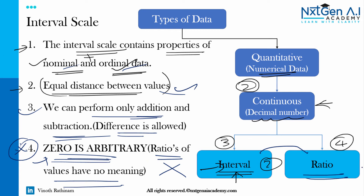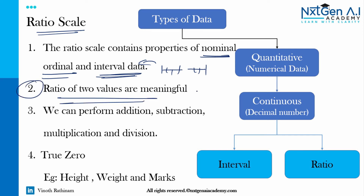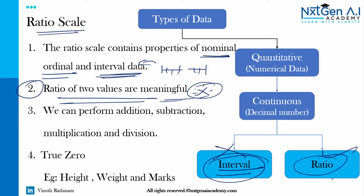Now the next one is ratio scale. The ratio scale contains the properties of nominal — named — ordinal — ordered — and interval — equal distance. In addition, there is an absolute zero, and the ratio of two values is meaningful. This is the important point. Here we can perform addition, subtraction, multiplication, and division, and it has a true zero.